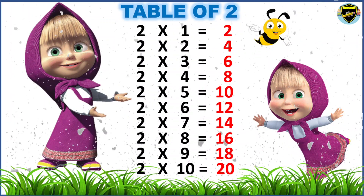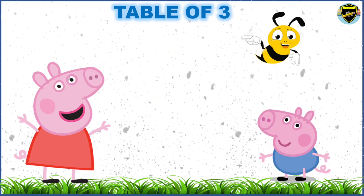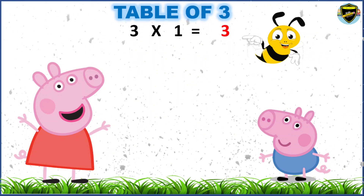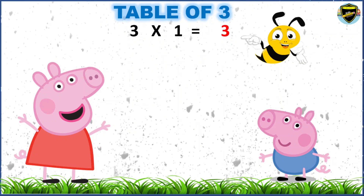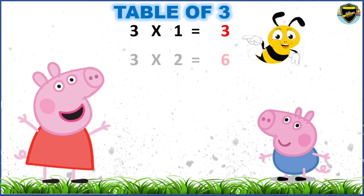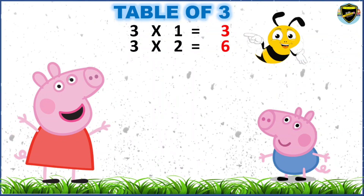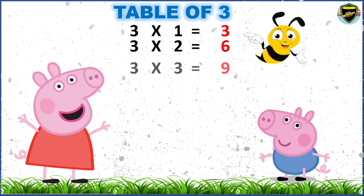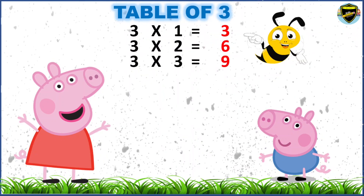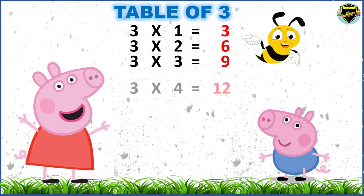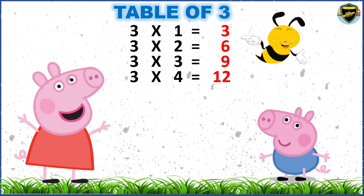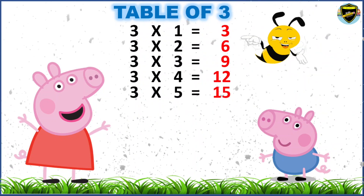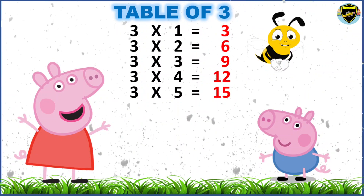Now, let's learn the table of 3. 3 1s are 3. 3 2s are 6. 3 3s are 9. 3 4s are 12. 3 5s are 15.